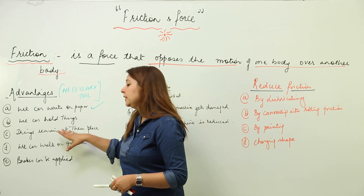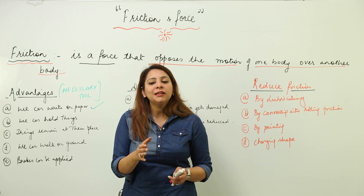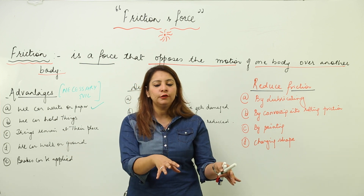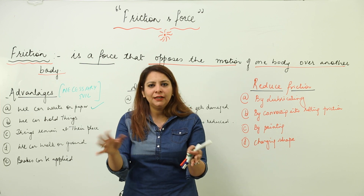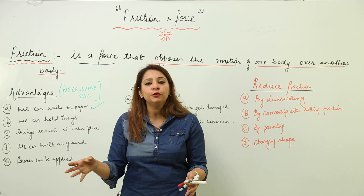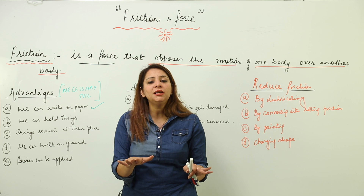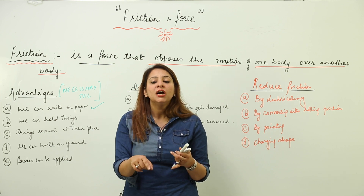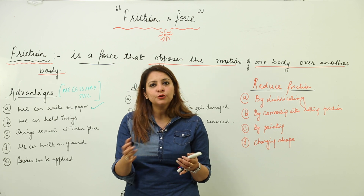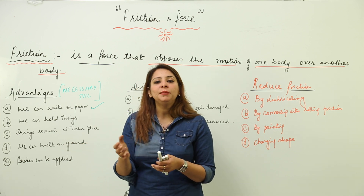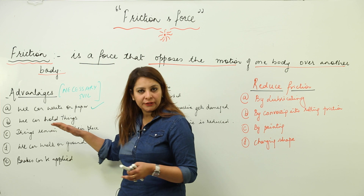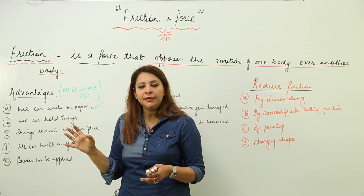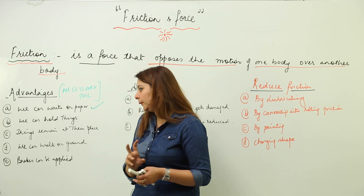Third, things remain at their places. Like a TV kept on a table, a bed on the floor, or a table or chair on the floor — they remain in their position just due to friction between their surface and the ground. Otherwise, without friction, they would slip out. Things remain where we keep them just due to friction.